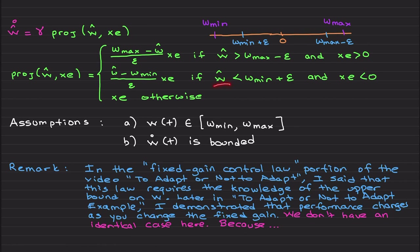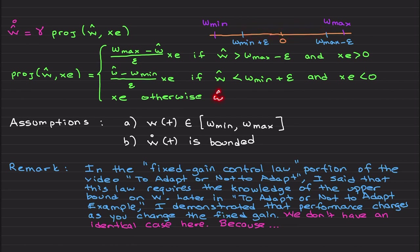Likewise, if ŵ is less than w_min plus ε — meaning your ŵ estimate is in that lower region — and if x·e is less than zero, meaning you are going to hit the w_min limit, then this also stops the adaptation. In the worst case when ŵ = w_min, this becomes zero so adaptation stops. If ŵ takes values in the interior of the domain, then ŵ̇ = γ·x·e as before. The purpose of the projection operator is to keep ŵ bounded within the min and max limits.